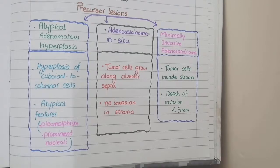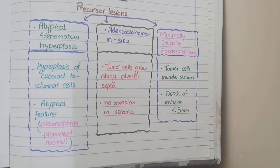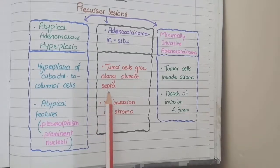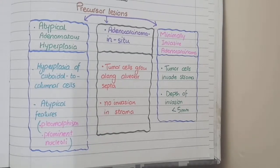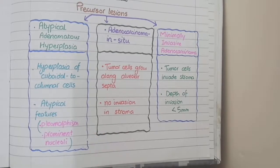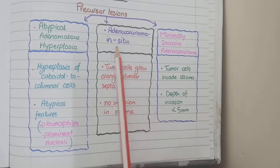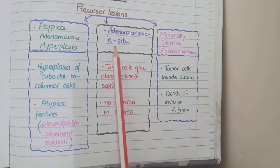The second precursor lesion is adenocarcinoma in situ, in which undifferentiated cancerous cells grow along the alveolar septa. In situ means that the tumor cells sit in their own site and do not show stromal invasion, thus preserving the alveolar architecture. So carcinoma means cancerous cells and in situ means no invasion.